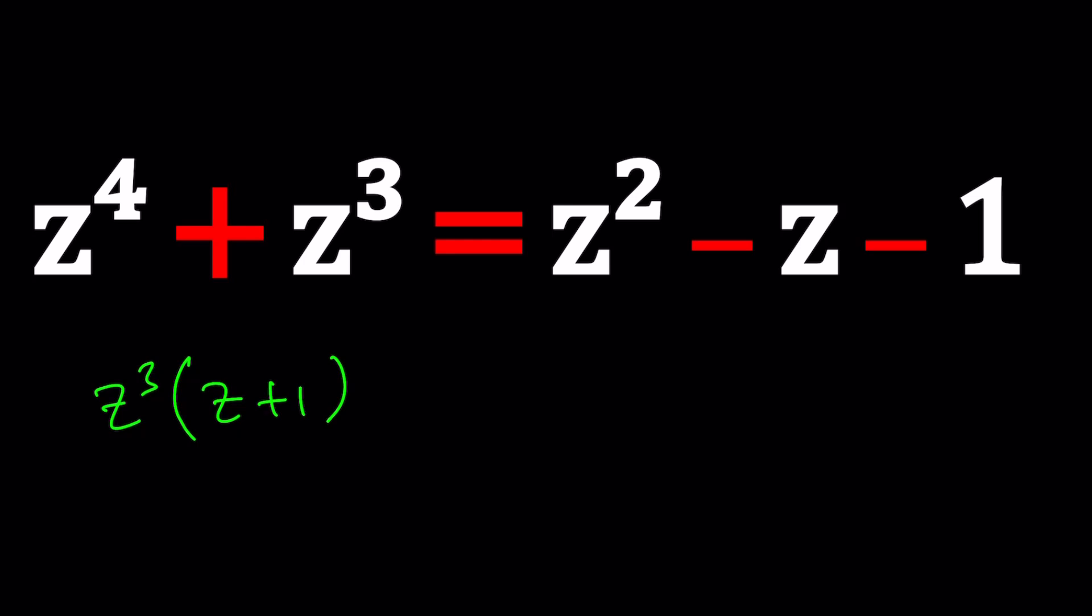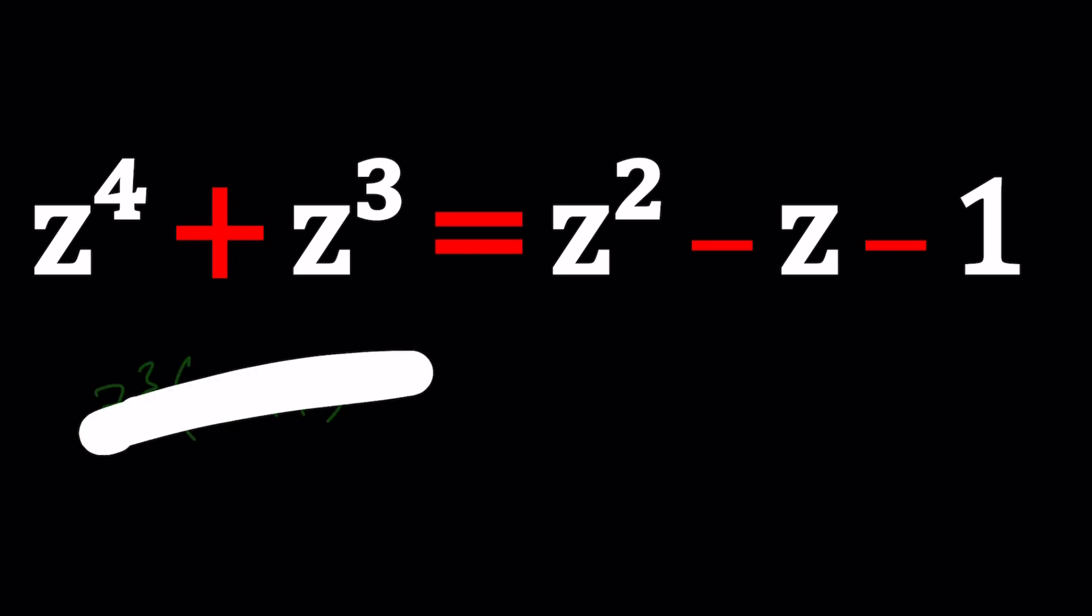So what should we do then? We should put everything on the same side. Right? When you can't do anything, try to set the whole thing equal to zero and hopefully you can deal with this quartic as a whole. Great.